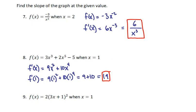I just realized that in problem 7 I found the derivative but didn't evaluate it at x = 2. So f'(2) is 6/2³, which is 6/8, which comes out to be 3/4. That's the final answer for that.